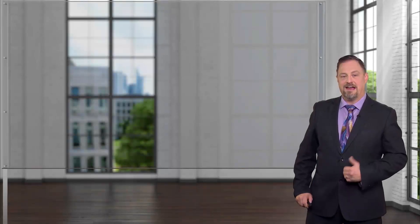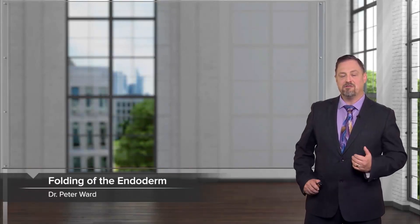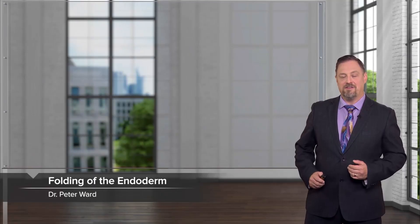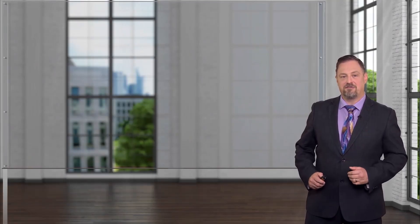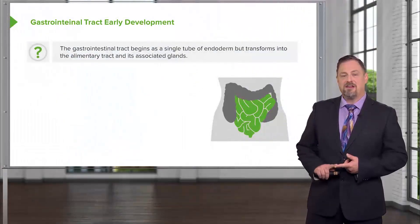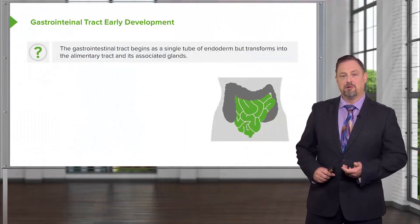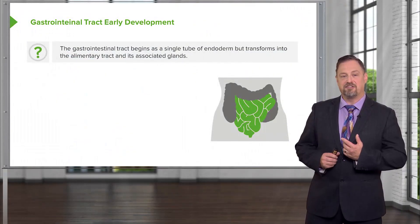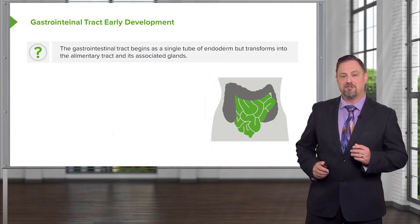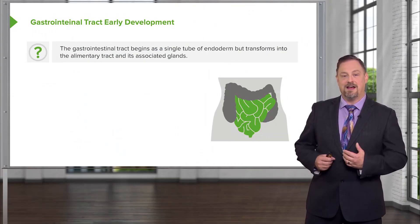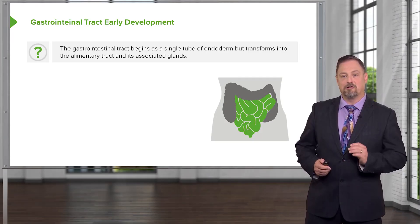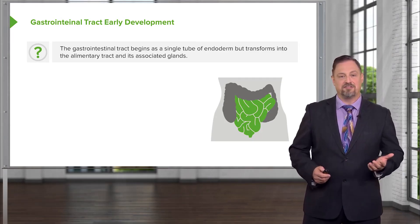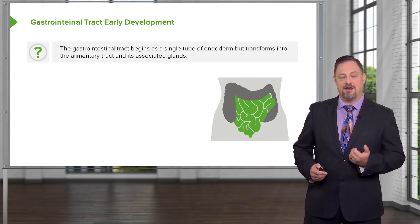We will begin discussing how the gastrointestinal system develops by looking at the endoderm and how it folds to create the original gut tube and its associated structures. The gastrointestinal system begins as a simple tube from mouth to anus, but some very interesting things happen along the way. It has to extend, elongate, and develop a variety of glands that are associated with it, such as the liver and the pancreas.